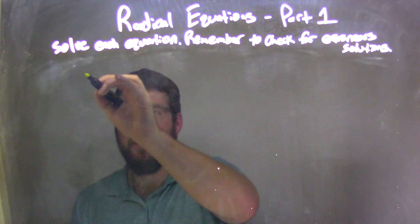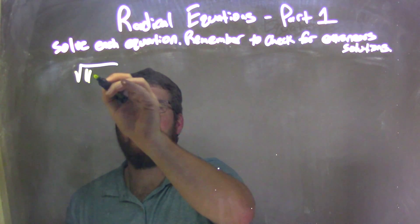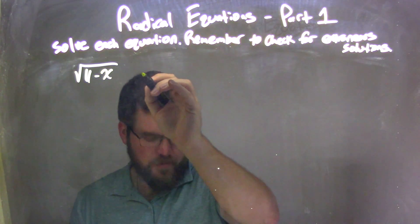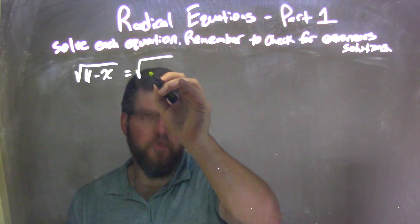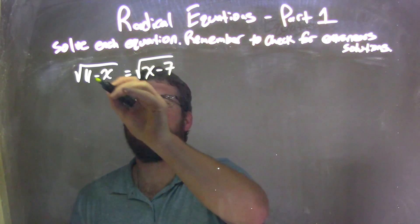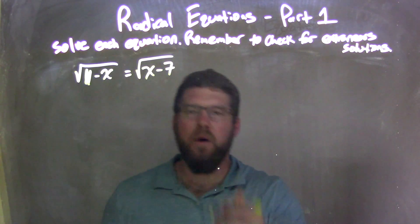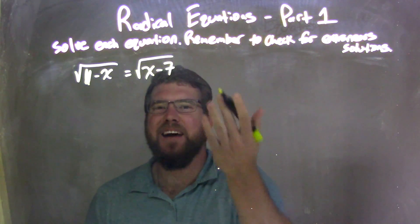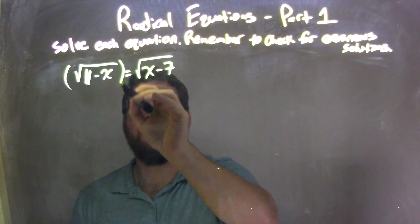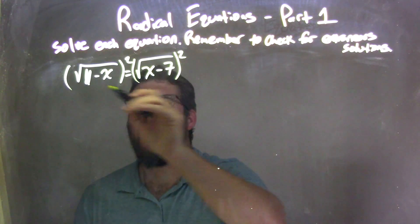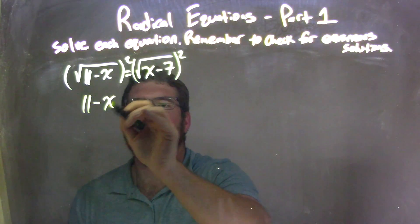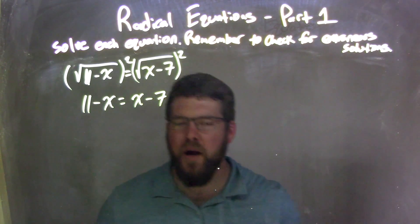If I was given this equation here, square root of 11 minus x equals the square root of x minus 7. Well, square roots on both sides, I'm going to square both sides and eliminate them. Square roots are gone. 11 minus x is here on the left, and x minus 7 on the right.